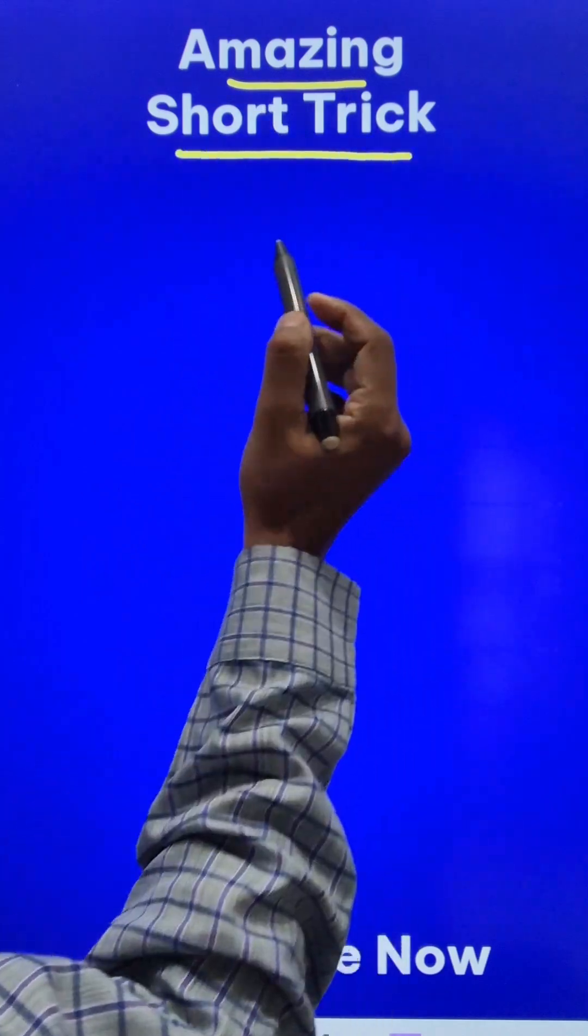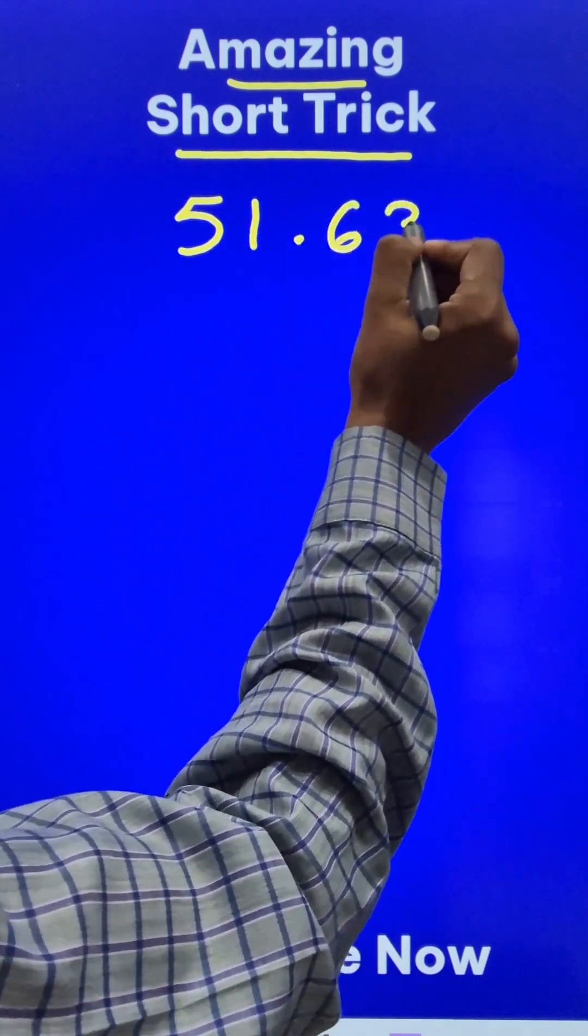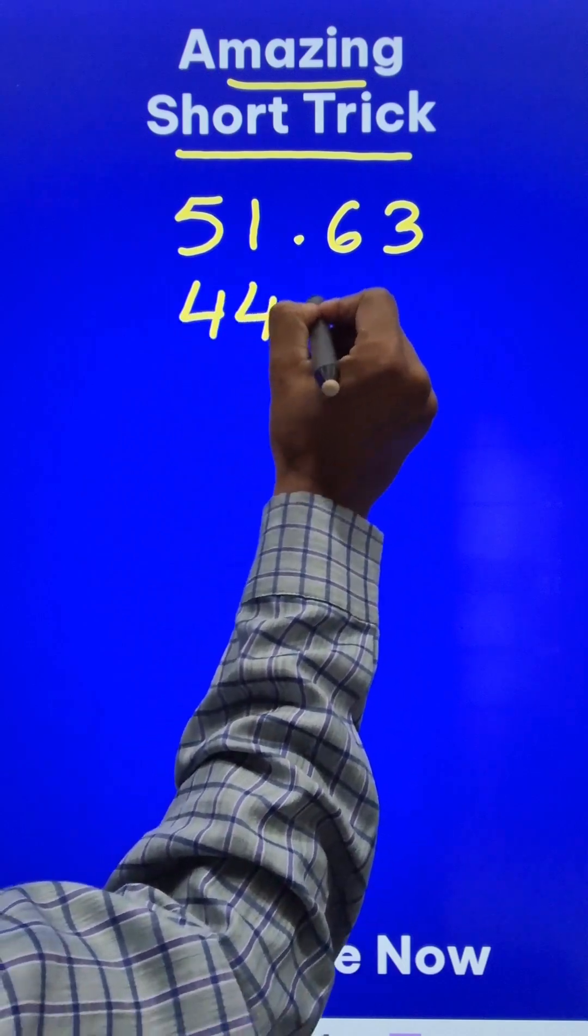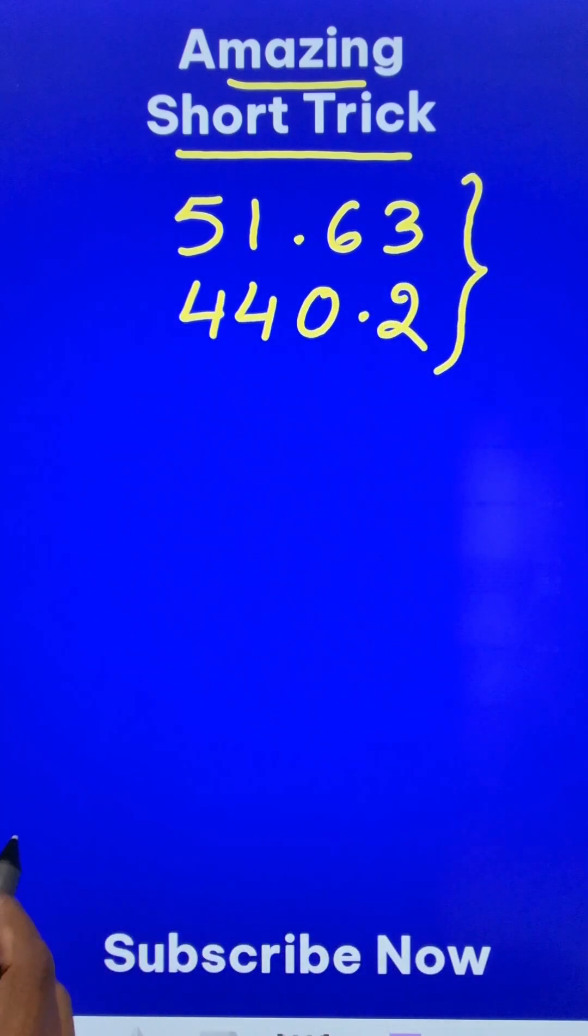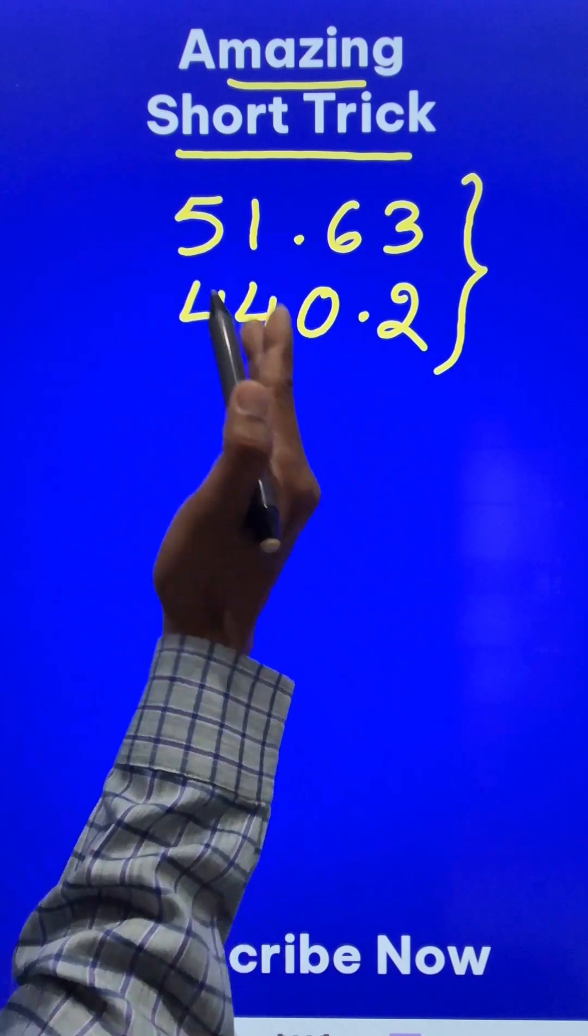Here is another amazing short trick to multiply decimal numbers as big as 51.63 and 440.2. Look at the numbers, they are huge. And we will be able to do this in a single step if you know a little bit of Vedic Maths, the vertically and crosswise method.